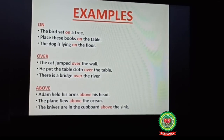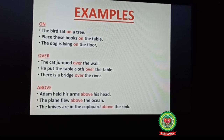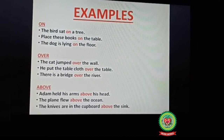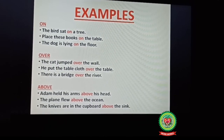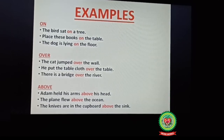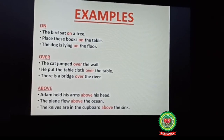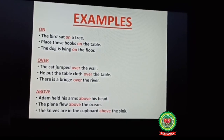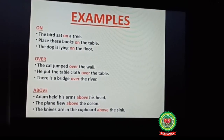Above: 'Adam held his arms above his head,' meaning he held his arm in a higher position. 'The plane flew above the ocean' — the plane is at height, not touching the ocean so we don't use 'on,' and not covering the ocean so we don't use 'over'; it is at a height from the ocean, so we use 'above.' Third example: 'The knives are in the cupboard above the sink.'